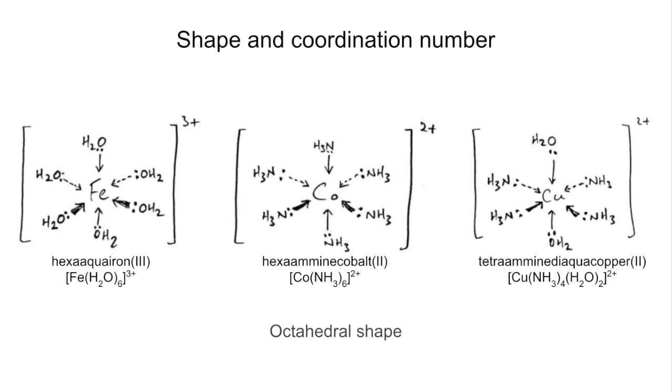In all of these complex ions, we've got octahedral shape, 90 degree bond angles, and coordination number—remember, that's the number of coordinate bonds being made to the central transition metal ion—is 6.